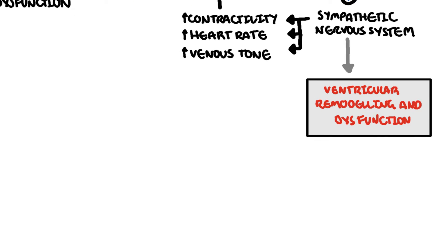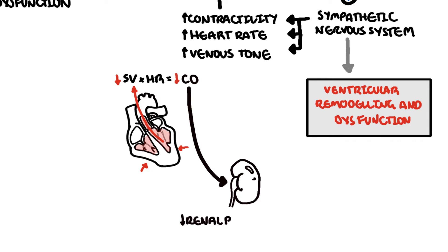In addition to this, reduced cardiac output means that there is reduced renal perfusion. As a result, the kidneys will activate what's called the renin-angiotensin-aldosterone system. This is in the hopes to also increase cardiac output, however long term, again causes ventricular remodeling.